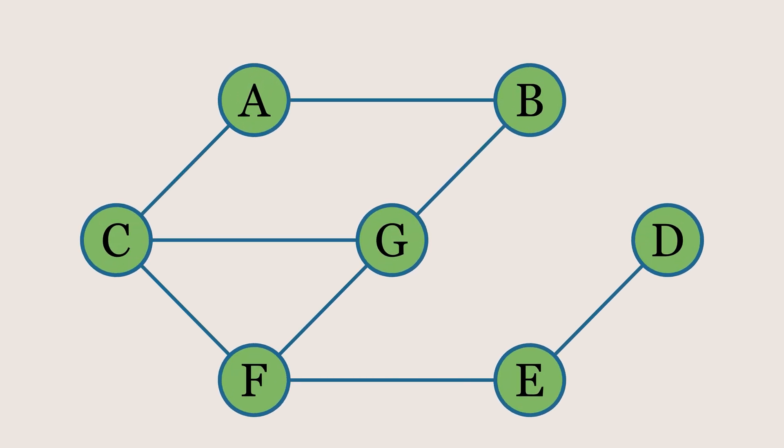Let's see how BFS, or breadth-first search, operates on a graph. Here, we have a graph along with its corresponding adjacency list, which represents its connections.